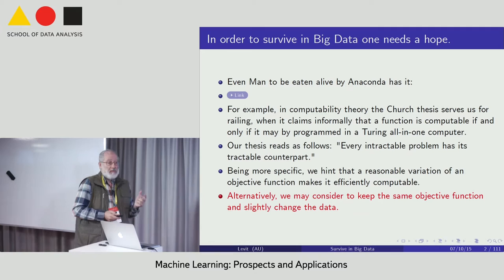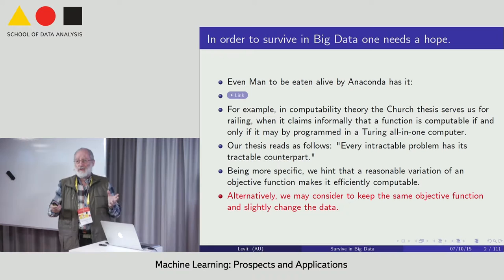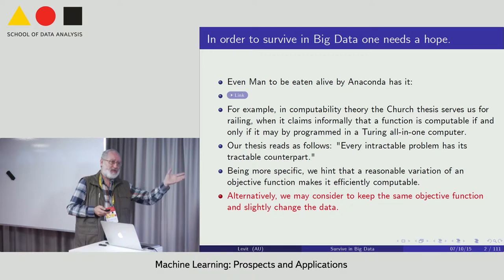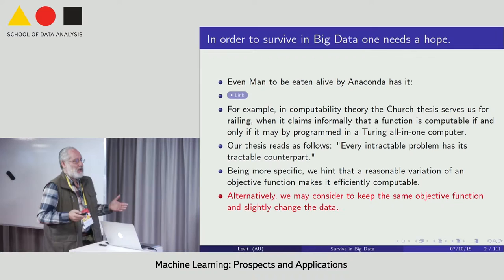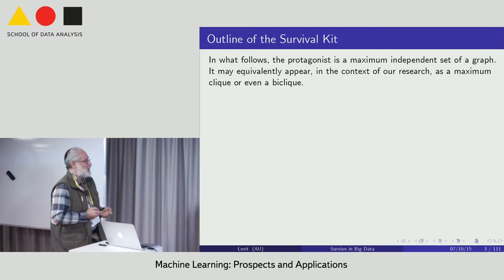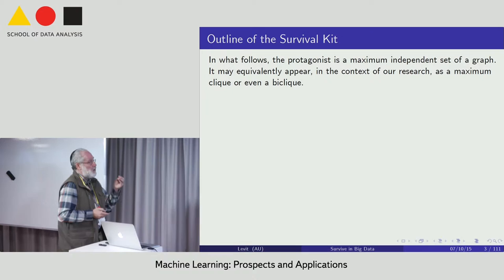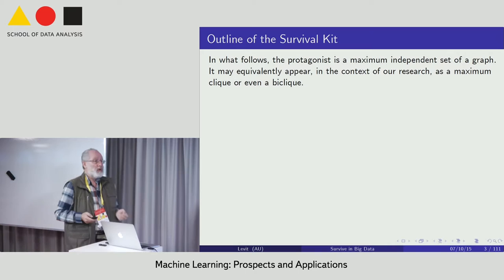I'm trying to give you another thesis here that every intractable problem has its tractable counterpart. Trying to be more specific, what I'm going to say is that if you have a problem with difficult objective function, let's say NP-hard objective function, you can change it a little and get a much better computable function. If it doesn't work, you can consider the same objective function and change the data. Actually, when you work with the real world, there's a lot of noise.